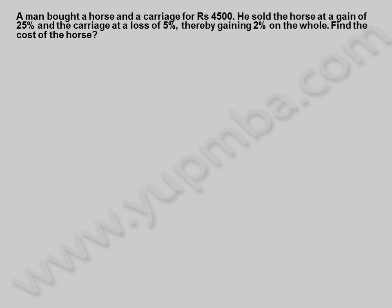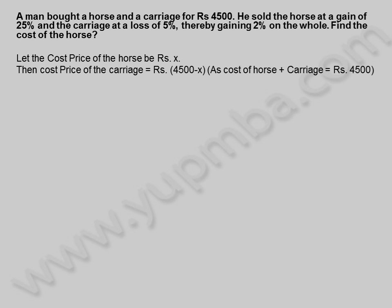A man bought a horse and a carriage for Rs. 4,500. He sold the horse at a gain of 25% and the carriage at a loss of 5%, thereby gaining 2% on the whole. Find the cost of the horse. Let the cost price of the horse be Rs. X. Then cost price of the carriage is equal to Rs. 4,500 minus X, as cost of horse plus carriage is equal to Rs. 4,500.